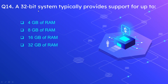Question number 14: a 32-bit system typically provides support for up to? The options are 4GB of RAM, 8GB of RAM, 16GB of RAM, and 32GB of RAM. The correct option is 4GB of RAM. A 32-bit system is usually limited to 4GB of RAM. If you install more than 4GB — say 8GB — in a 32-bit operating system, the extra 4GB is wasted and not used.